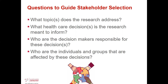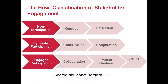Now the question becomes: how do we approach stakeholder engagement? Goodman and Sanders Thompson wrote a very nice article defining three levels of stakeholder engagement. The first, what they call non-participation, is a very unidirectional approach where researchers develop the intervention themselves, then may reach out to stakeholders to think about recruitment or implementation rollout. They may educate the community about what the intervention is and get some input in that regard.